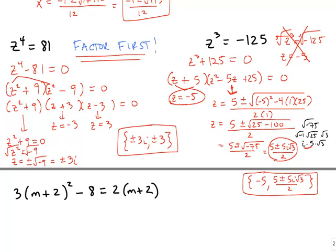When you have higher powers — fourth degree, third degree — try to factor as much as you possibly can first. Set each linear factor to zero, and for any quadratic factors, use the square root property or the quadratic formula to finish solving.